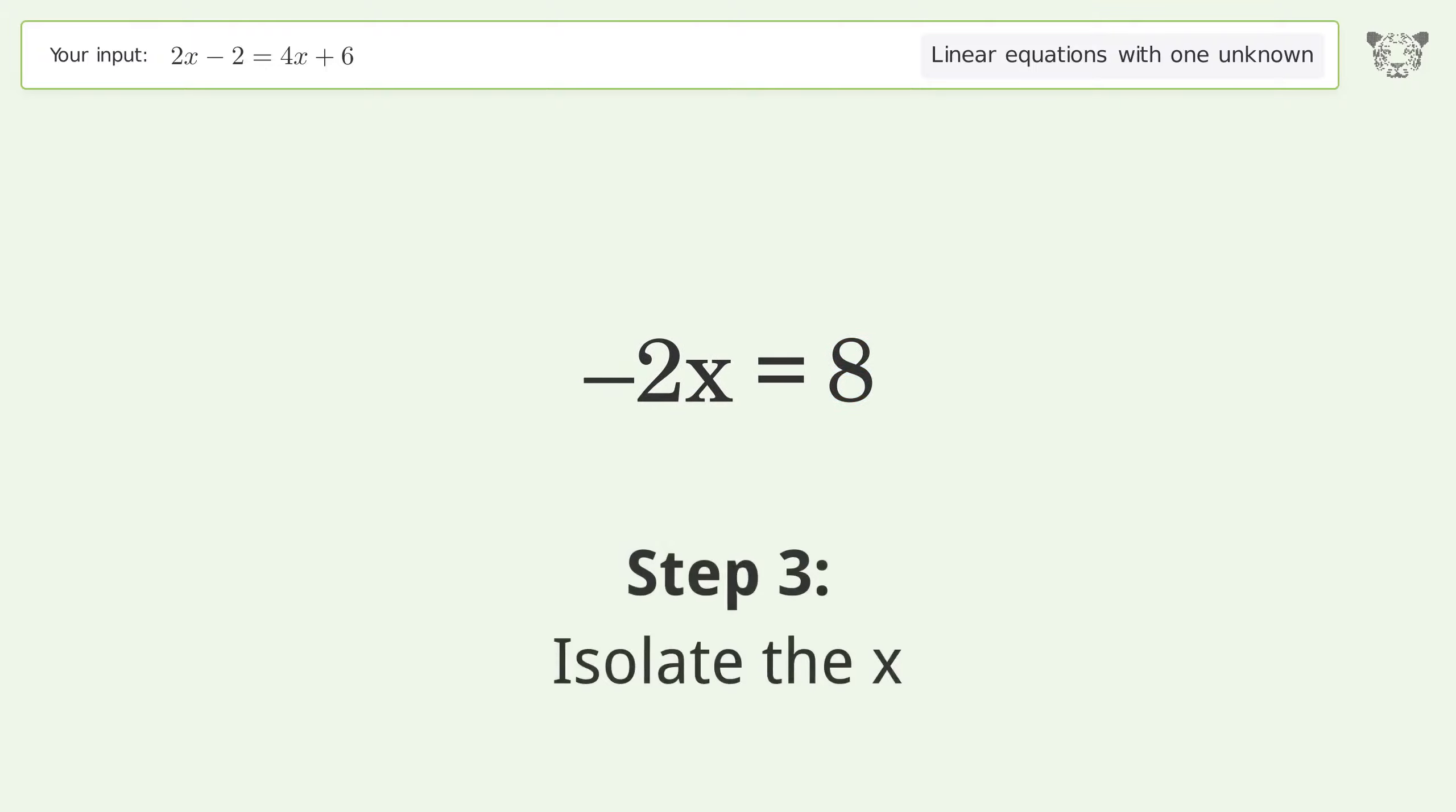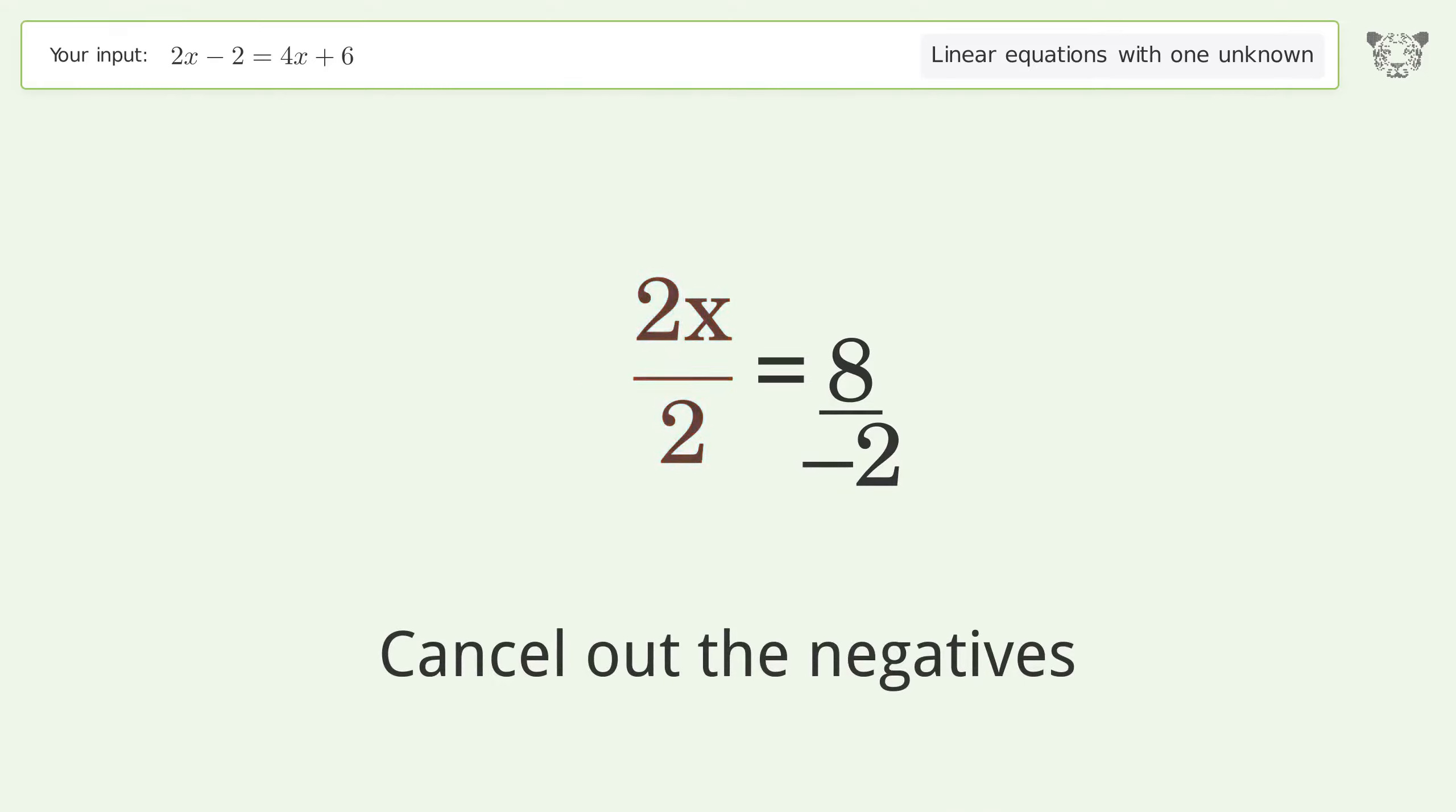Isolate the x. Divide both sides by negative 2. Cancel out the negatives. Simplify the fraction.